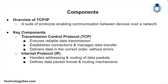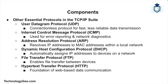TCP/IP comprises several protocols, each serving a specific purpose in the communication process. The two main components are TCP — Transmission Control Protocol — which is responsible for ensuring reliable data transmission between devices, establishing a connection, managing data transfer, and ensuring data is delivered in the correct order and without errors; and IP — Internet Protocol — which is responsible for addressing and routing data packets between devices, defining the format of packets and providing mechanisms for routing them to their destinations.